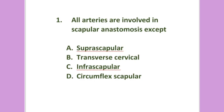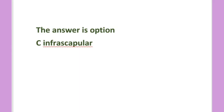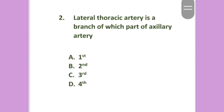Vessels of upper limb revision MCQs. All arteries are involved in scapular anastomosis except: suprascapular, transverse cervical, infrascapular, circumflex scapular. The answer is option C: infrascapular.